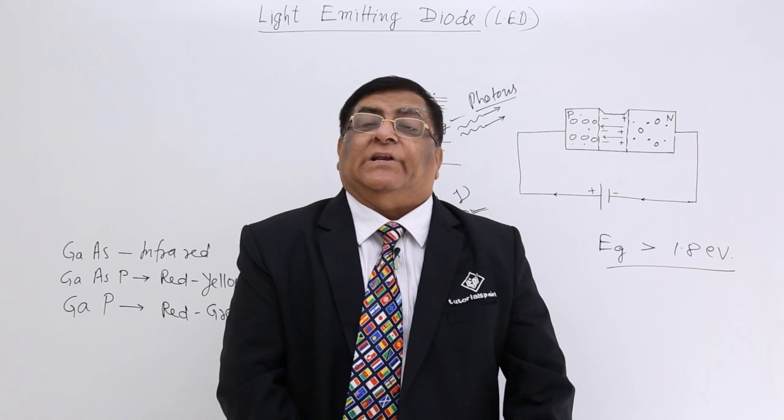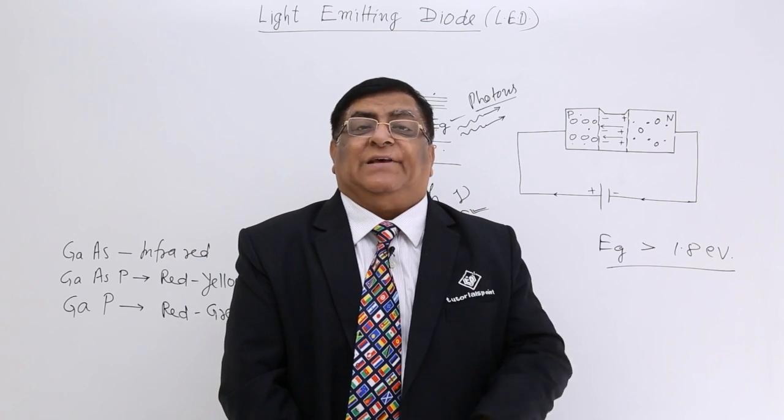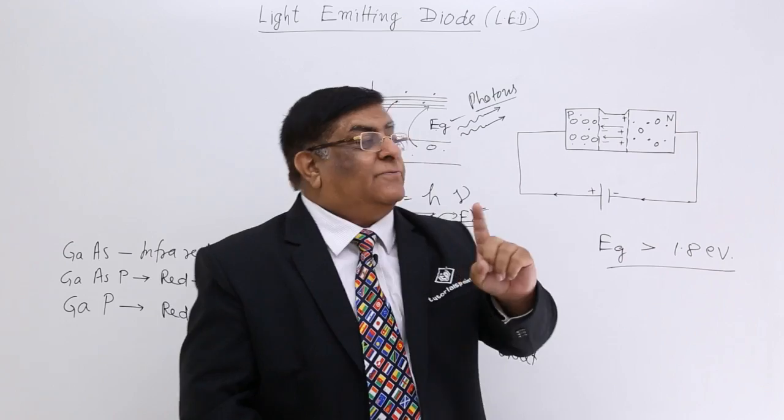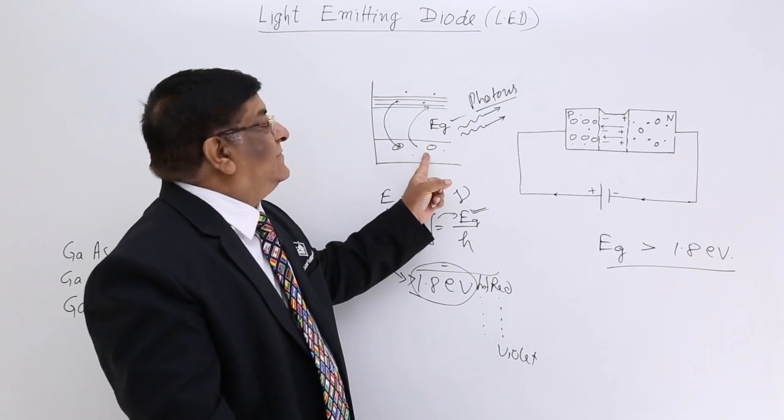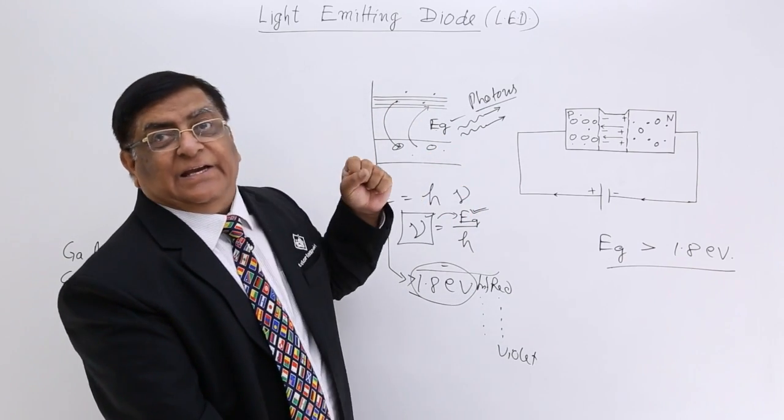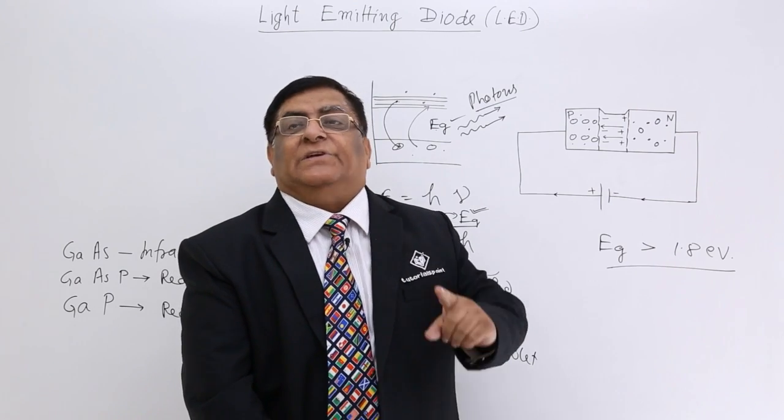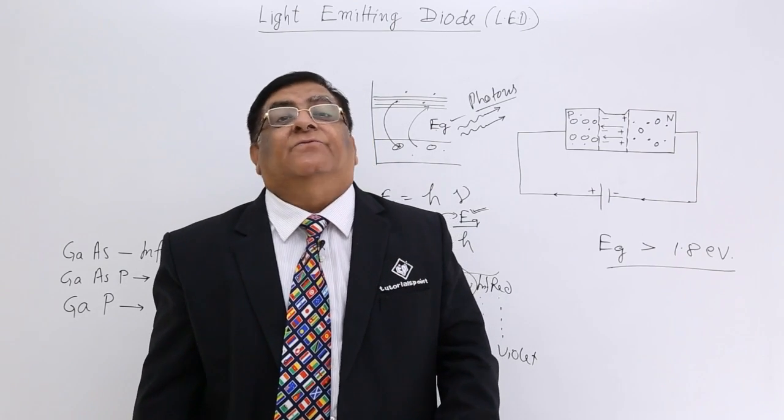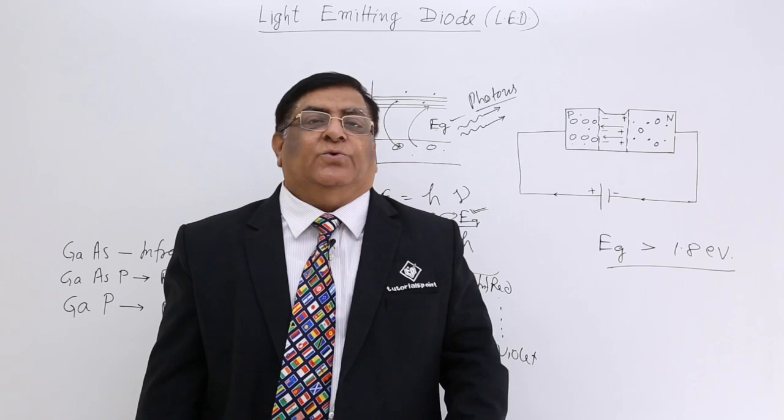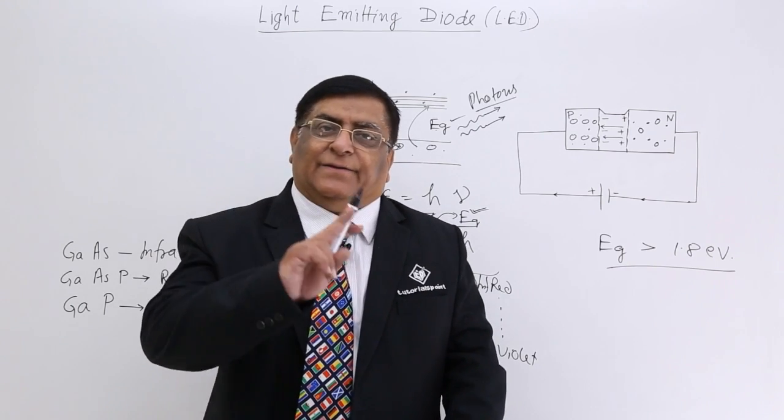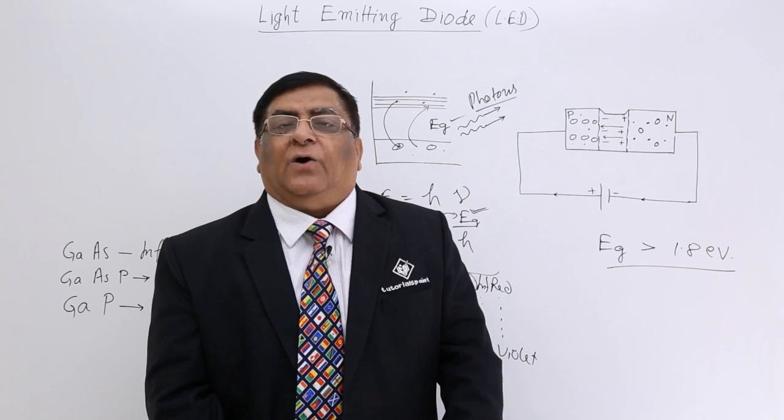Now energy gap for silicon is 0.7. So if we use a silicon for recombination and we take the energy, it will not make the waves which are photo waves or which are visible waves. So we do not use silicon. Now first again we come back to working. How does it work?